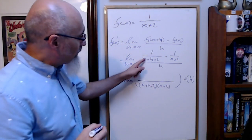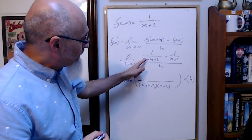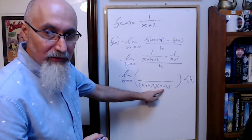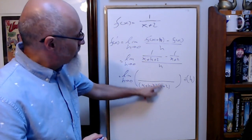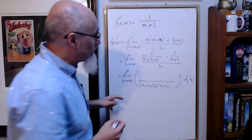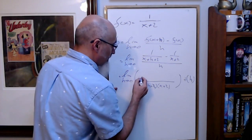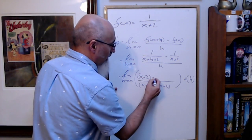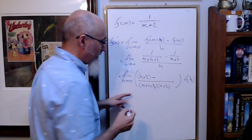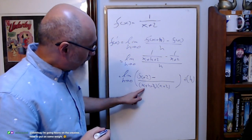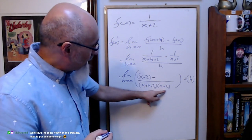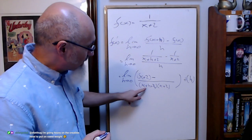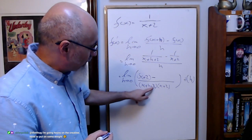Common denominator for adding these two fractions is x plus h plus 2 times x plus 2. What did you multiply the first fraction by? You multiply by x plus 2, so the top becomes 1 times x plus 2, which is x plus 2. Minus — what did you multiply x plus 2 by to get the second denominator? You multiply by x plus h plus 2.